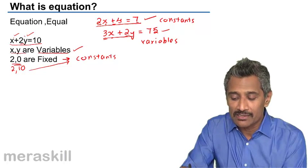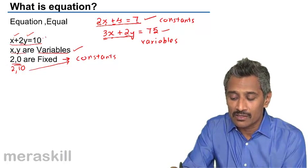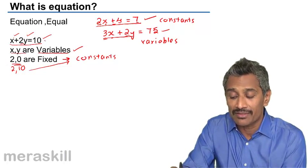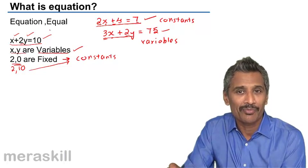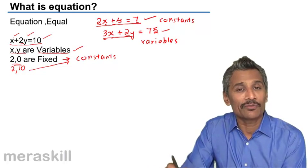Right. So, for example, these two are the variable terms. This is a constant term because this doesn't have any variable associated with that. Right, this is a simple understanding of an equation.